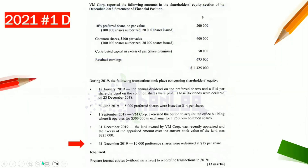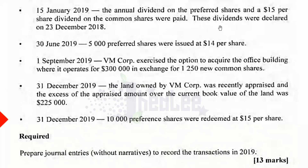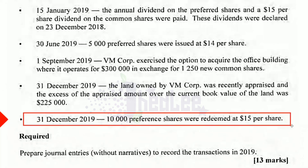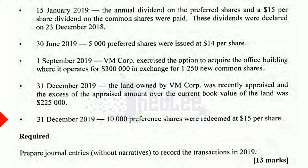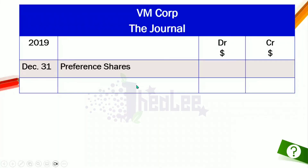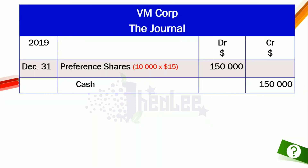There is another transaction on December 31, 2019: 10,000 preference shares were redeemed at $15 per share. The business is redeeming preference shares, so the account to be debited is preference shares capital, showing a reduction. The value is 10,000 shares at $15 per share, equaling $150,000. The account to be credited is cash for $150,000, as cash is used to make the payment.